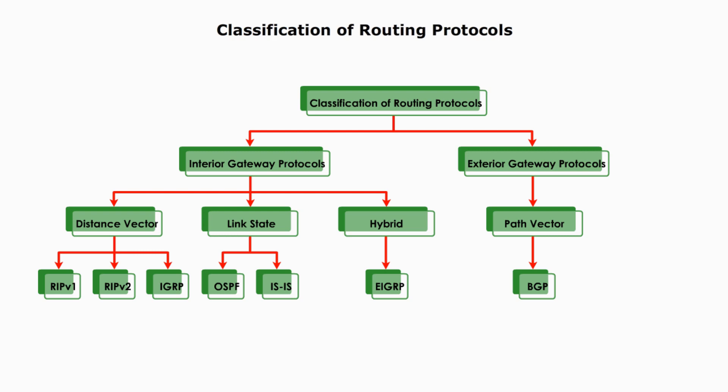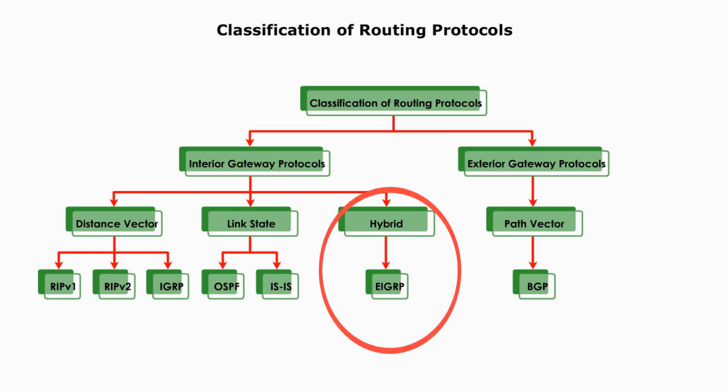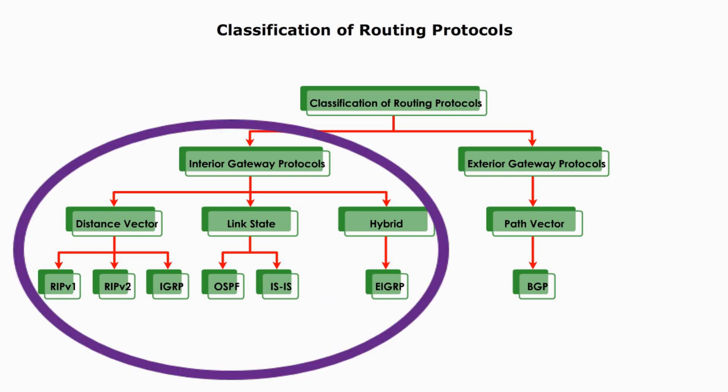For example, distance vector routing protocols such as RIP version 1, RIP version 2, and IGRP use hop count to determine the best path. Link state routing protocols such as OSPF and IS-IS use many other routing metrics. EIGRP uses both distance vector and link state approaches. In the following lessons, we will look at different types of interior gateway protocols based on the different routing metrics.